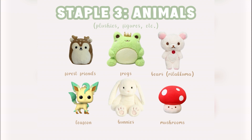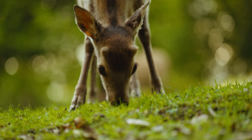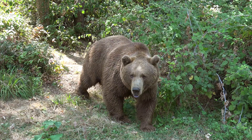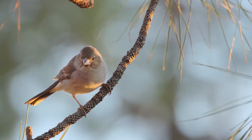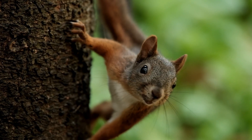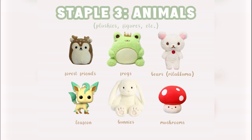A huge staple in cottagecore is the idea of wildlife and especially animals. Some of the most common animals depicted in cottagecore design are forest friends — think deer, bears, birds, squirrels, and many different kinds of foresty creatures that really blend well with the cottagecore aesthetic.